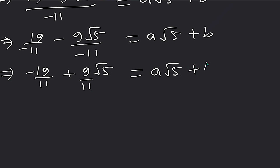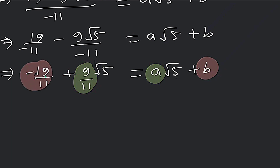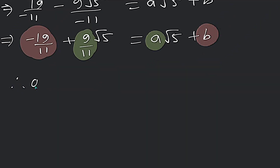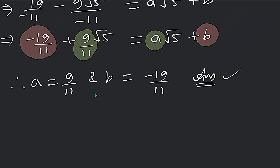So what is a√5 and what is b? Comparing: the coefficient of √5 is 9 by 11, so a is equal to 9 by 11. And b — we take the sign into account, because here there is a plus sign — b is equal to minus 19 upon 11. And this is our answer. The value of a and b both have come. Let's check this answer.